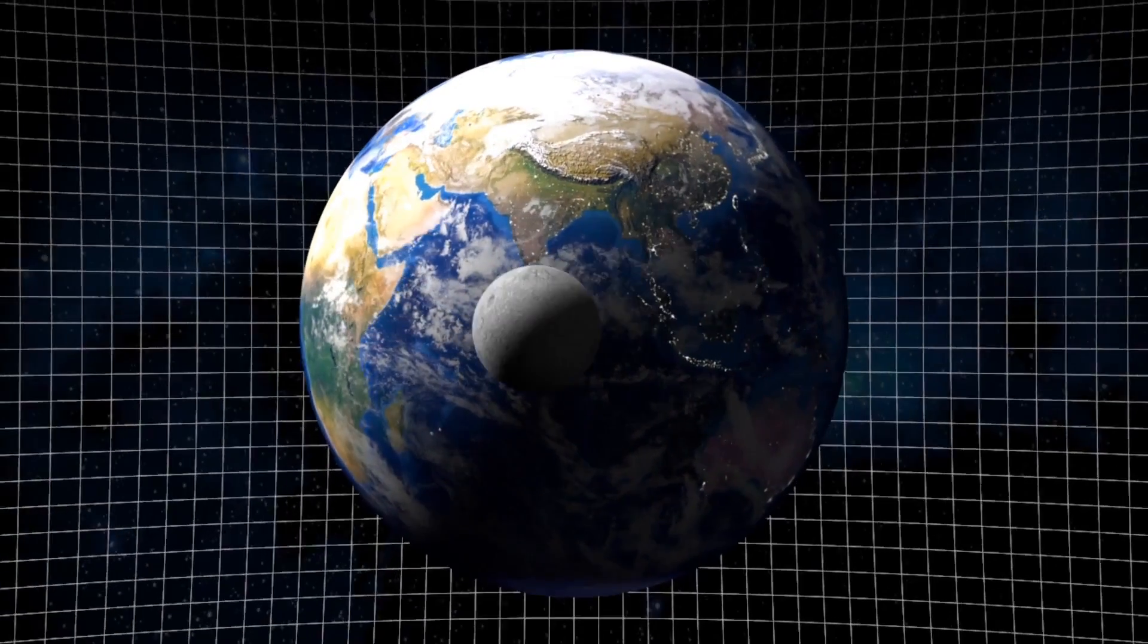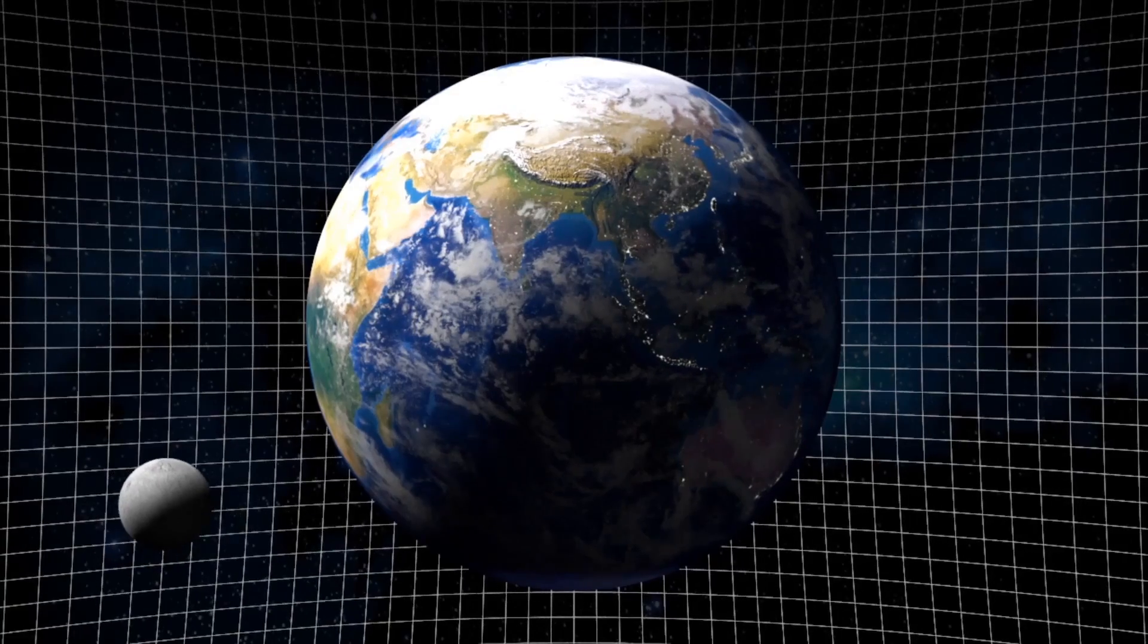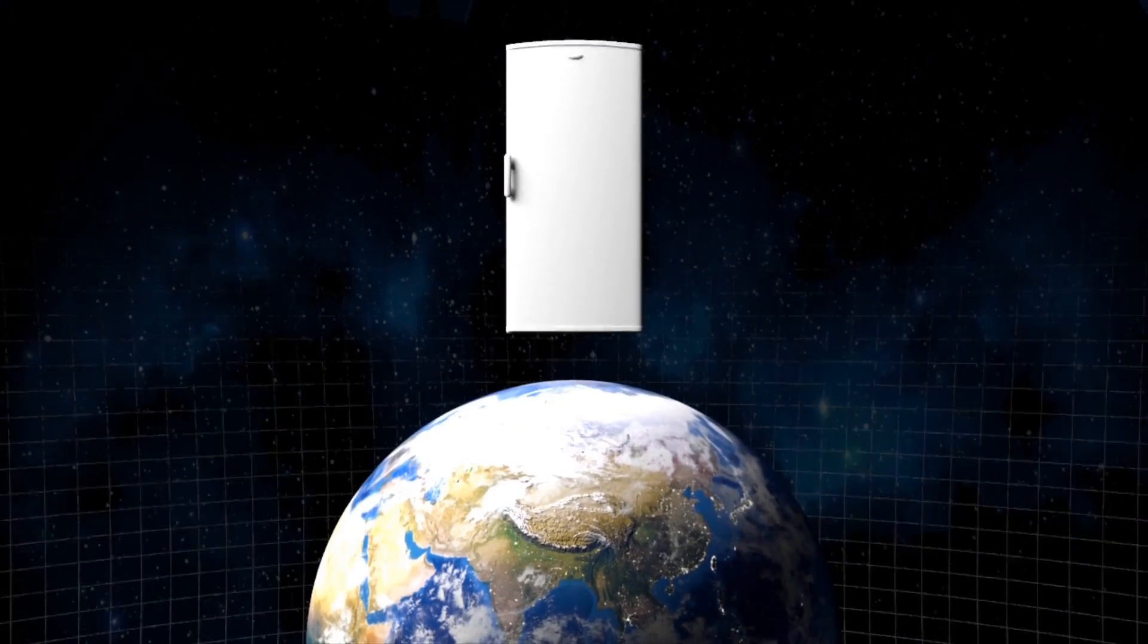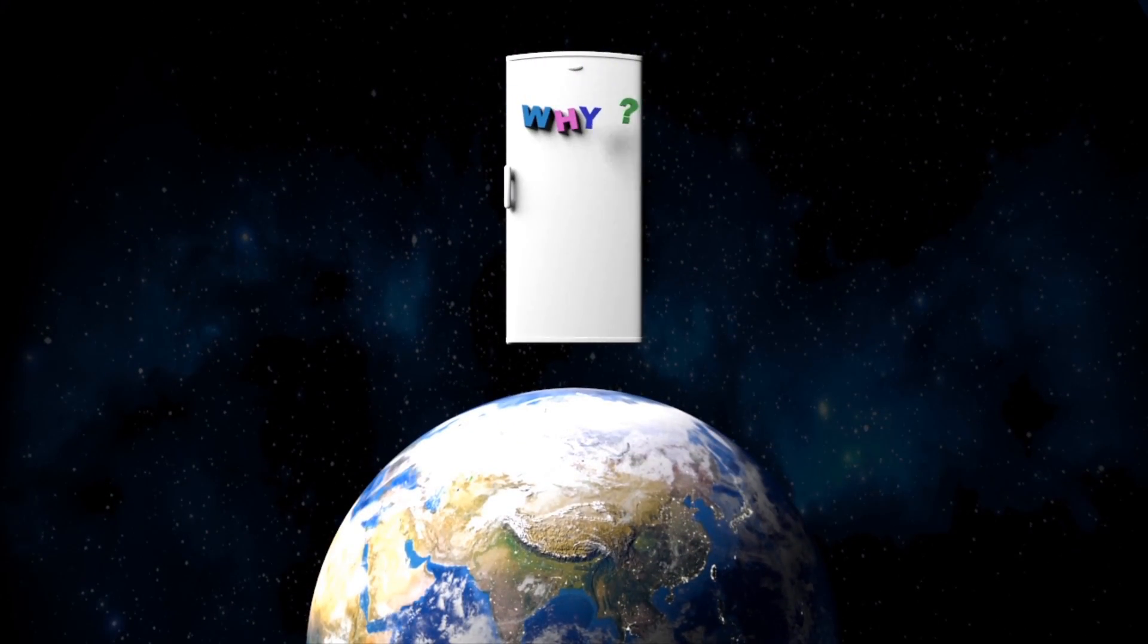A hundred years ago, Einstein showed that mass warps the fabric of space-time. But why is gravity so weak? Why does a fridge magnet stick to the fridge, despite the entire Earth pulling it down?